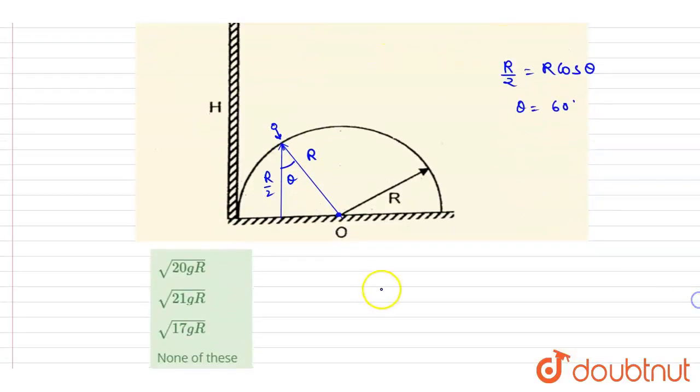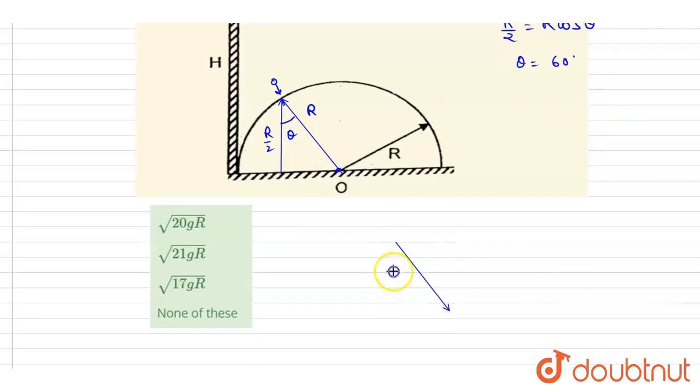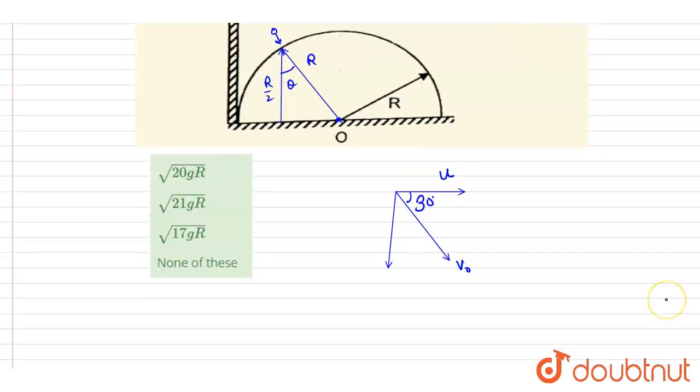So basically the particle strikes at an angle 60 degrees with the vertical. If I say this angle is with the vertical, it is making an angle 60 degrees, and this u will remain constant. So if you see this angle is 60, then this will be 30, and let's say this is v naught.